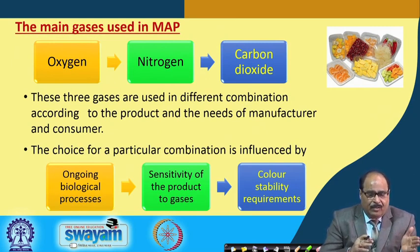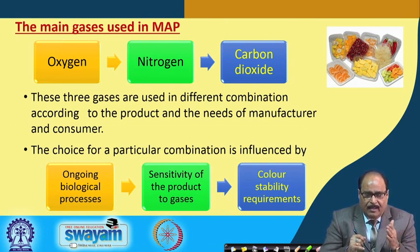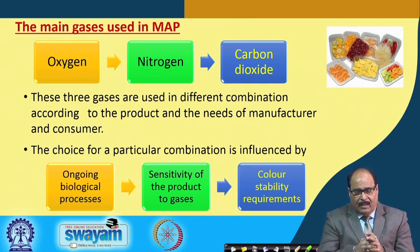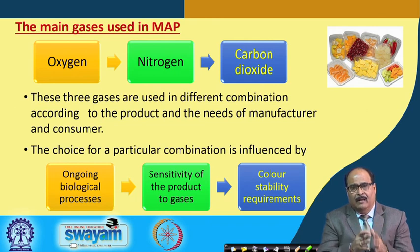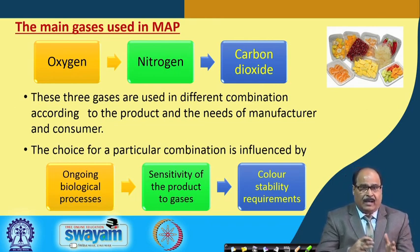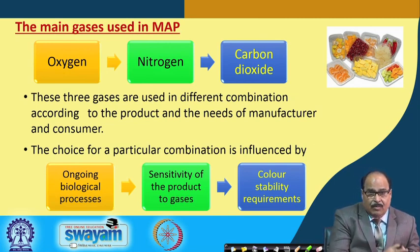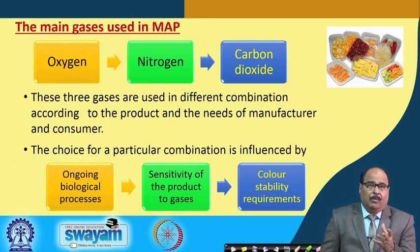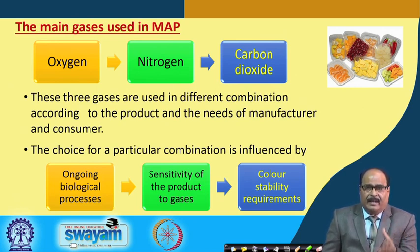The main gases used in MAP include oxygen, nitrogen, and carbon dioxide. These three gases are used in different combinations according to the product and the needs of the manufacturer or consumer. The choice of a particular combination is influenced by ongoing biological or chemical processes in the food, sensitivity of the food material to these gases, and the stability of food components like color stability, flavor stability, and other such requirements.